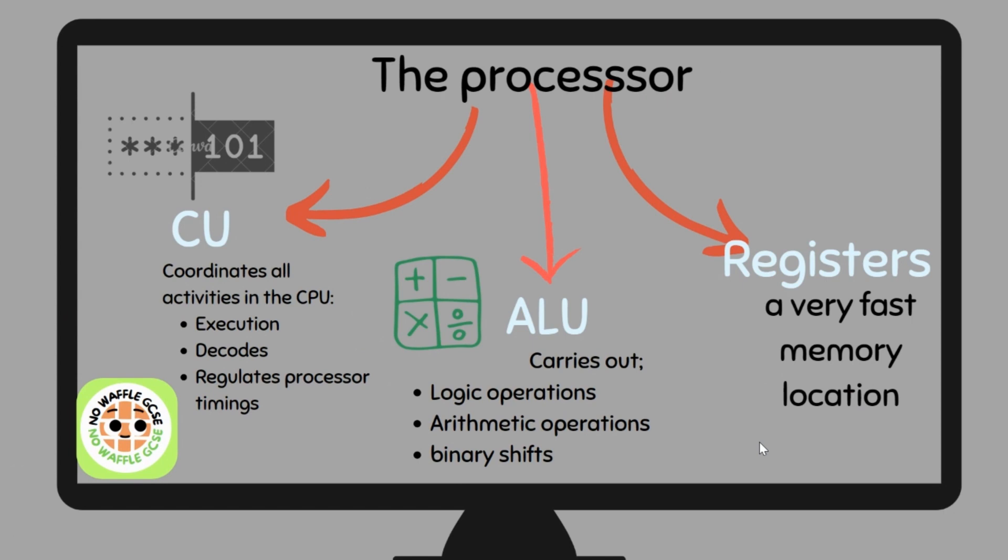The Control Unit coordinates all activities in the CPU, including execution, decoding, and regulating processor timings. You will understand more about what the CU does when we look at the FDE cycle later. The Arithmetic Logic Unit carries out arithmetic operations — for example, add, multiply, subtract, or divide — logic operations looking at binary zeros and ones, and binary shifts, moving data left or right to double or halve it.